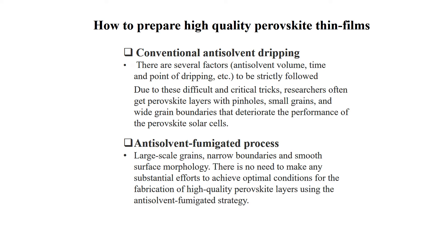Hello everyone. Today we will discuss one of our published papers about how to fabricate high-quality perovskite thin films. One of the famous methods to prepare such thin films is conventional anti-solvent dripping, where we drip or pour anti-solvent onto the perovskite precursor before ending the spin coating — mostly before 15 to 20 seconds.